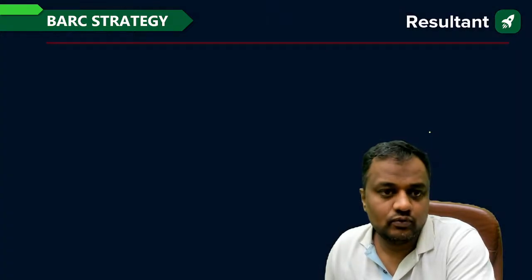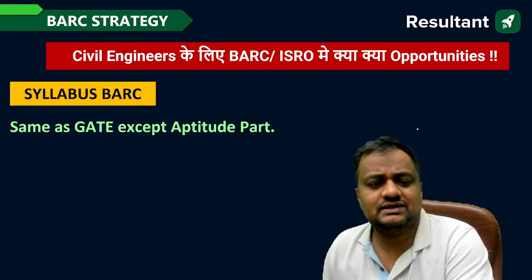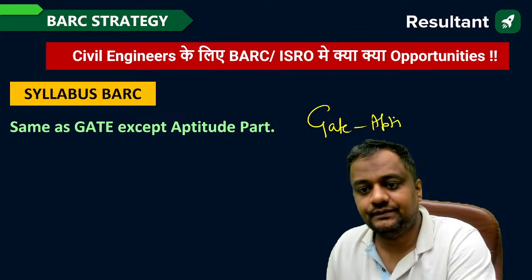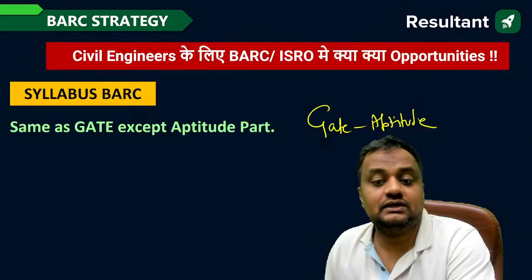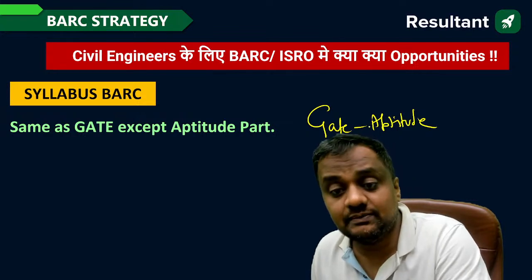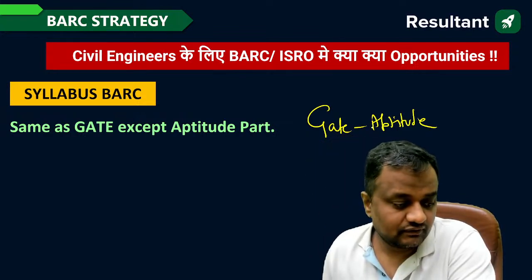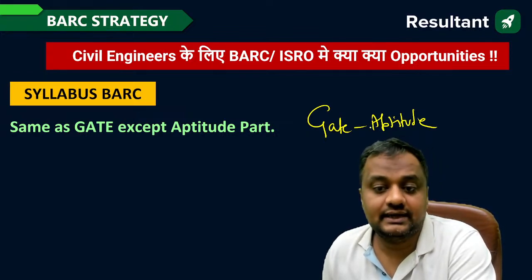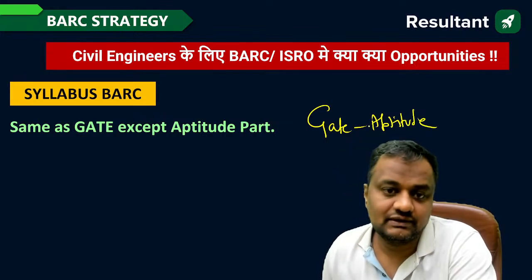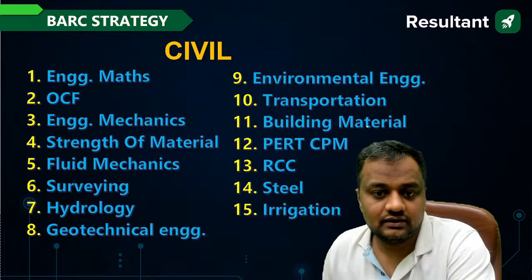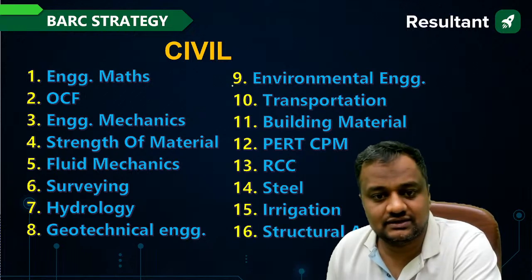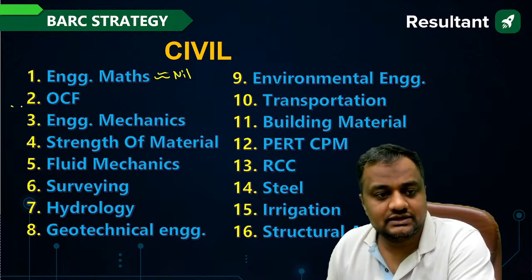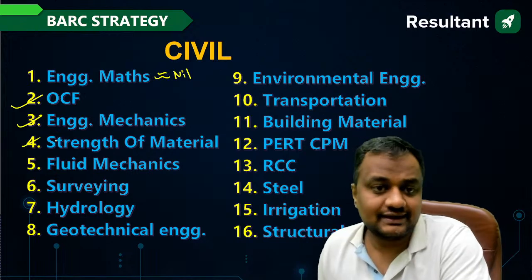The syllabus is the same as GATE minus the aptitude section — so you can call it GATE minus aptitude. Last time, engineering mathematics was almost negligible with very few questions; most questions were from core civil engineering subjects. Aptitude is not coming at all, and for topics like engineering mechanics and strength of materials, the syllabus is the same as GATE.